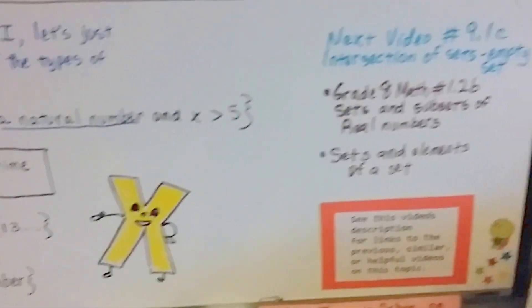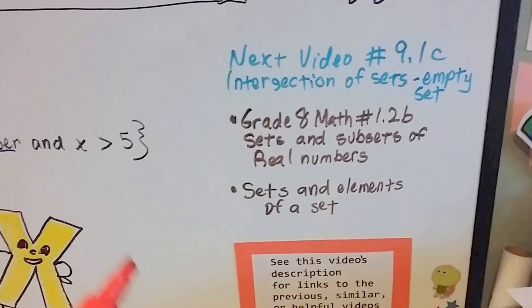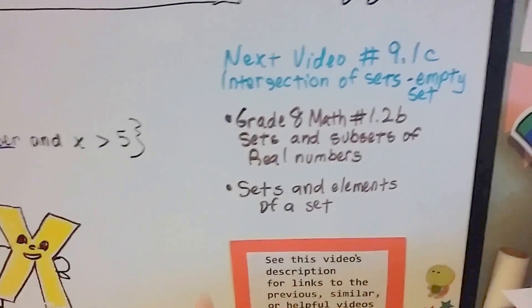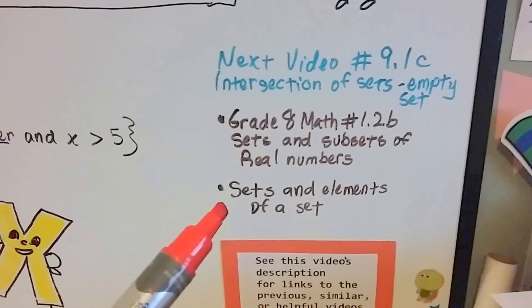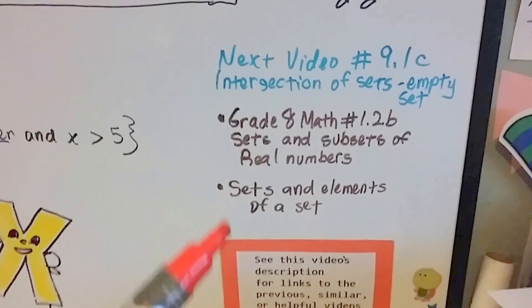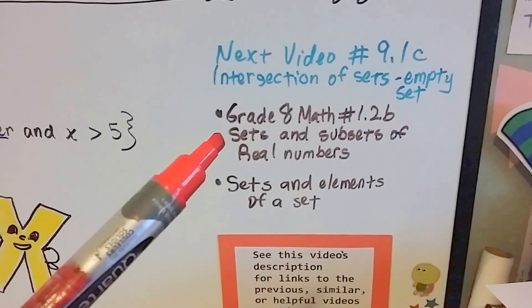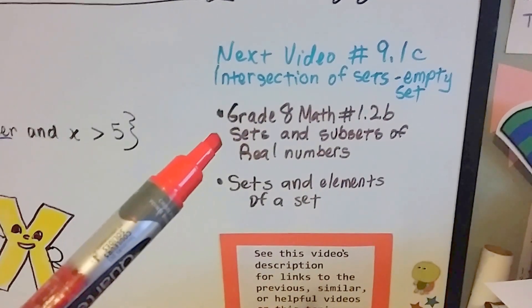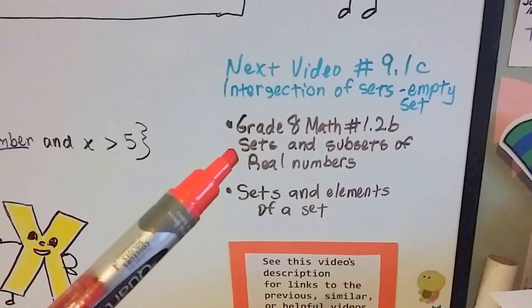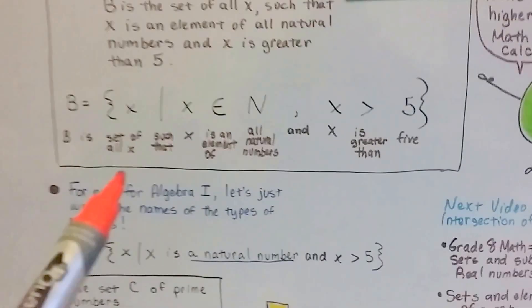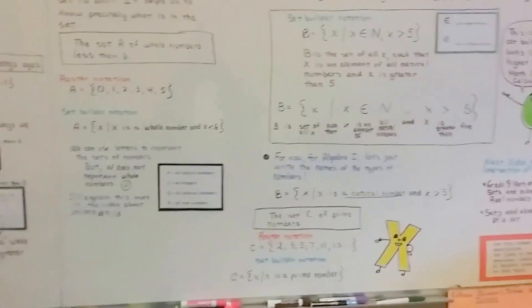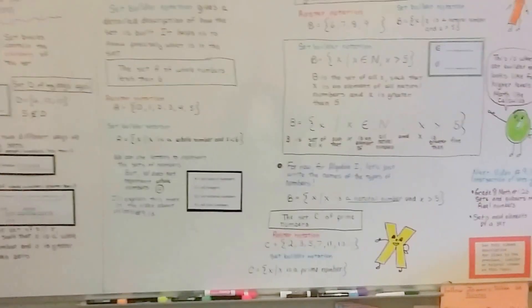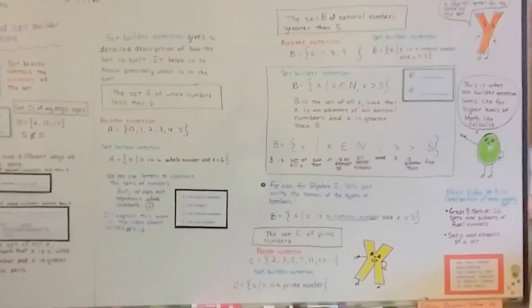Now, in our next video, 9.1c, we're going to talk about intersection of sets and empty sets. And, if you wanted to see the previous video, 9.1a, about sets and elements of a set, you can see the link in this description. And, there's going to be a link to the grade 8 math 1.2b video that talks about sets and subsets of real numbers. So, if you're confused about whole numbers, natural numbers, integers, rational numbers, real numbers, that video is going to help you. Alright. Let's go to the next video and talk about intersections and empty sets. I'll see you there.